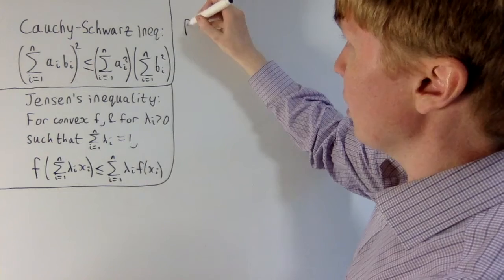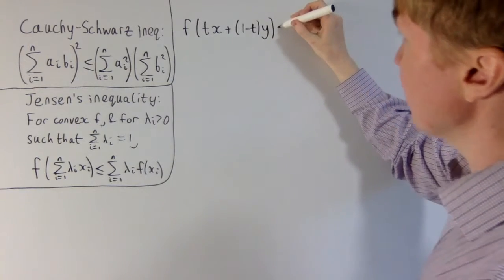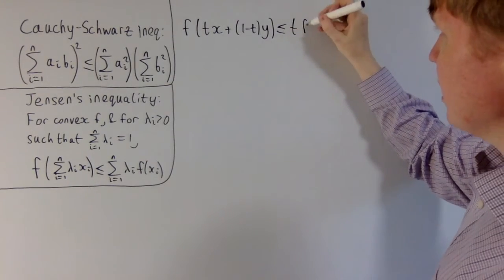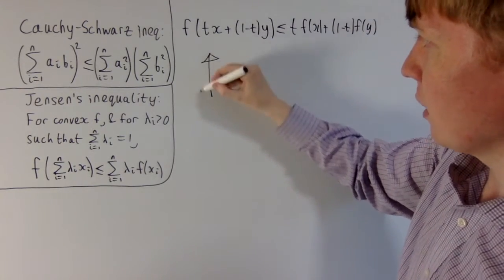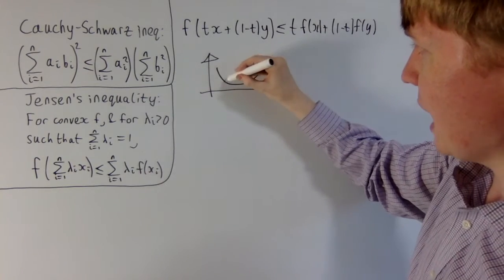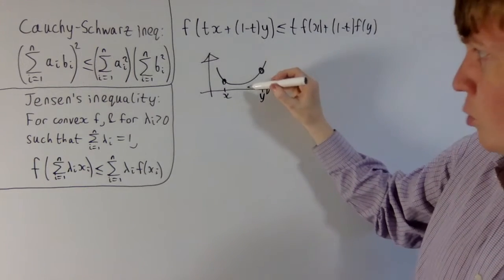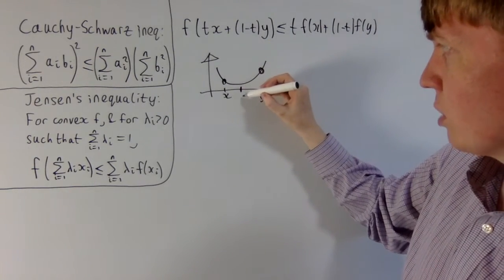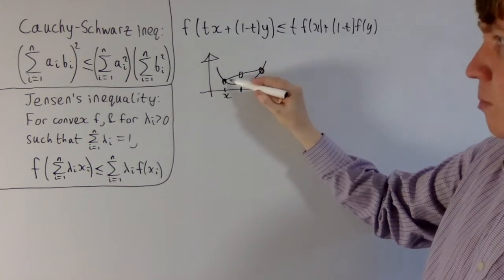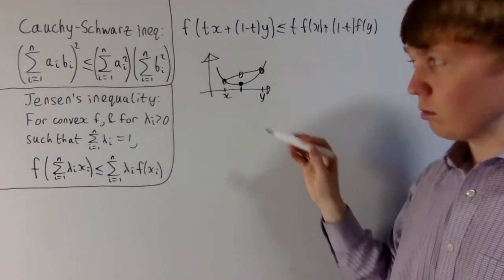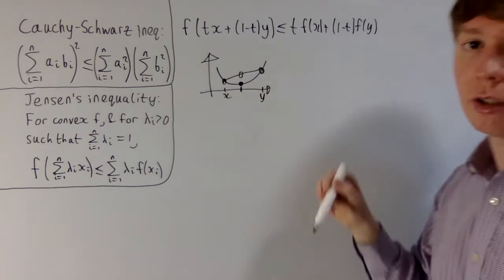By definition, if f is a convex function, and you've got some t between 0 and 1, and some x and y in the domain of f, then the convexity inequality is satisfied. Geometrically, tx + (1−t)y is a linear combination of x and y lying between them, and f of this point lies below the corresponding point on the chord between f(x) and f(y). The height of that point is tf(x) + (1−t)f(y), a linear combination of the two heights.